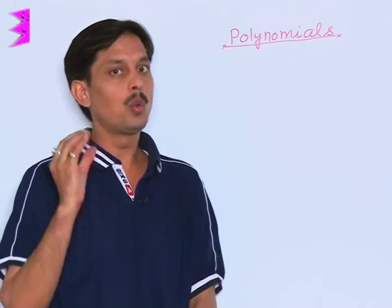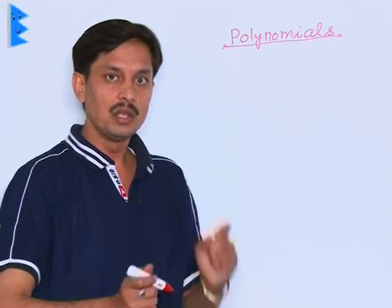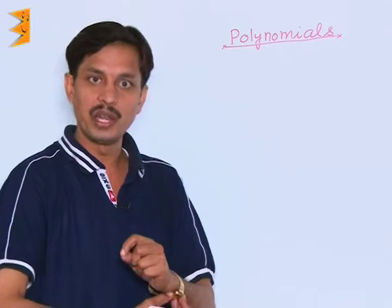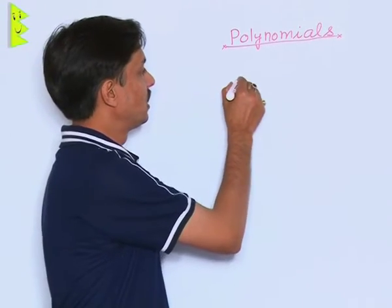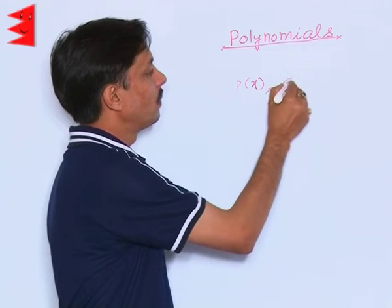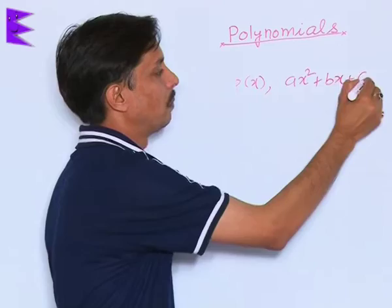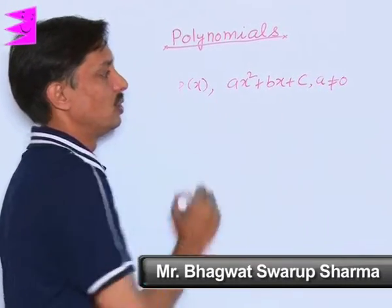If I write the quadratic polynomial in its standard form, then you have to notice the standard form of any quadratic polynomial is like this. It is A x square plus B x plus C, provided A is not equal to 0.